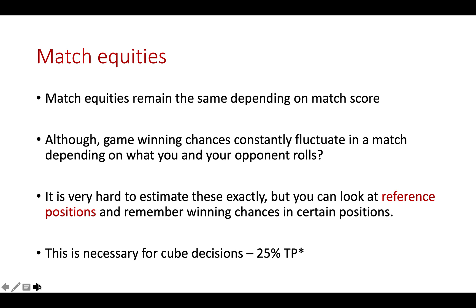For cube decisions, we need roughly 25 percent game winning chances. Again, this number changes depending on the match score — whether you're ahead or whether you're behind — and your take point goes up and down. When we're in the middle of a game, it's very hard to estimate exactly what our game winning chances are. But one way of doing this is to look at reference positions, remember them, and then recognise them over the board.